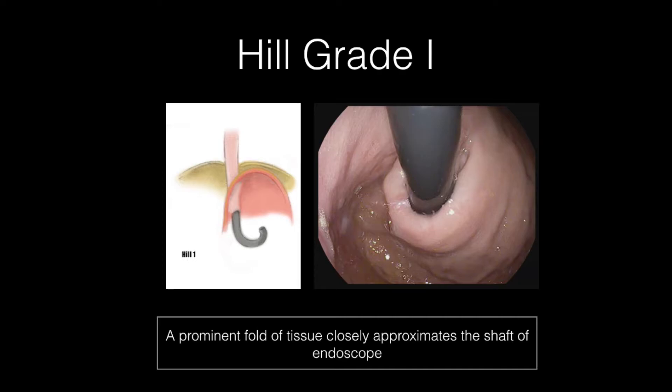A grade 1 valve is defined by the presence of a prominent fold of tissue closely approximated to the shaft of the endoscope and extending 3 to 4 centimeters along the lesser curve at the entrance of the esophagus into the stomach.